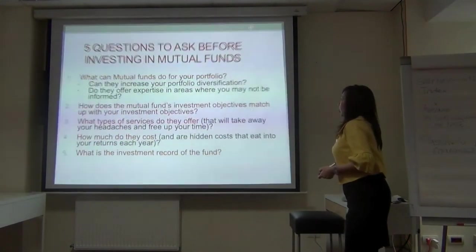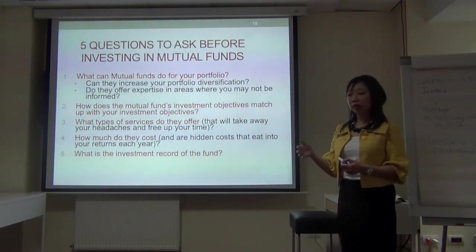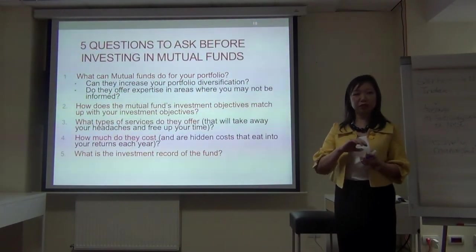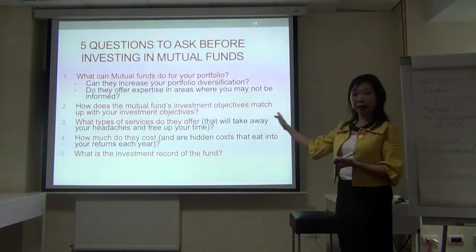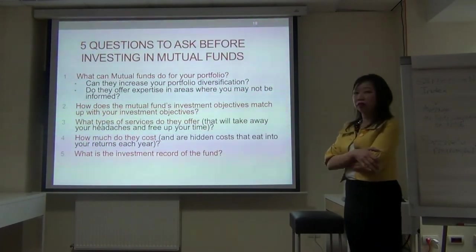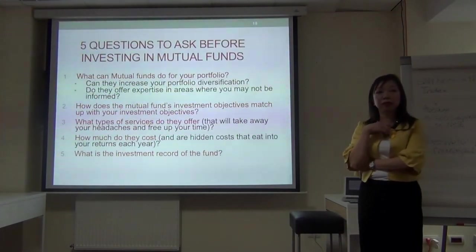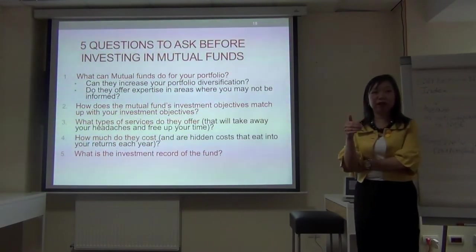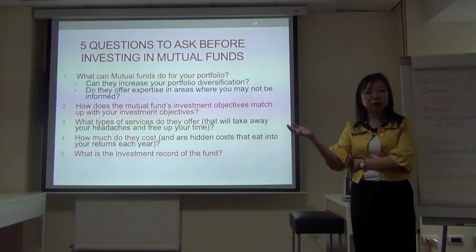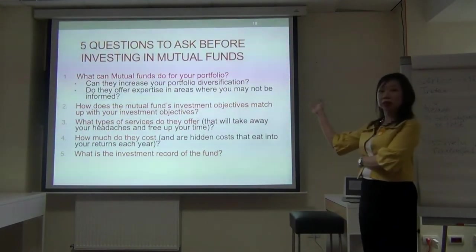So that's hedge funds. Mutual funds run the range between investment funds, insurance and investment-linked funds, pension funds, and various others. What can mutual funds do for your portfolio? For diversification — for example, working in Romania, you'd probably want a fund that invests outside this country to earn returns elsewhere. That's the meaning of geographic diversification.